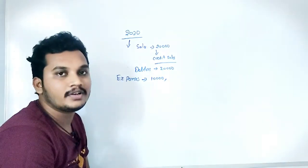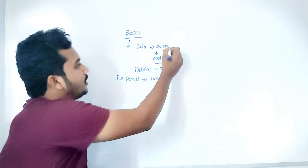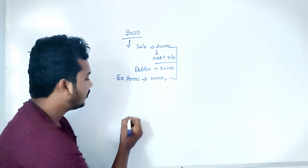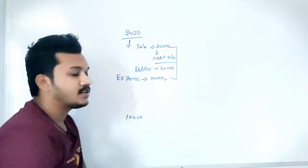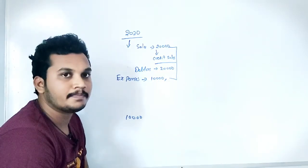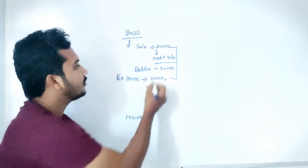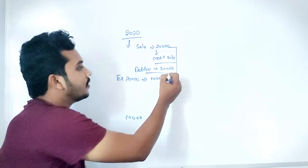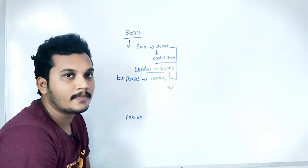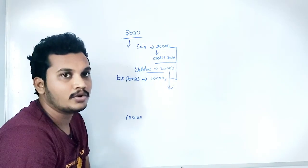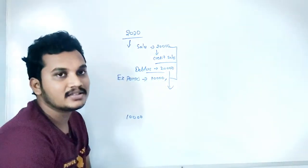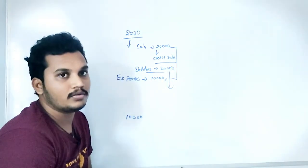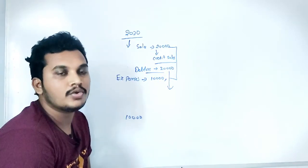So what is our profit? 20,000 in sales minus 10,000 in expenses — that is 10,000 profit. If you prepare a profit and loss account, our profit will be 10,000. But here, if you see, there are debtors from those credit sales, meaning we haven't received the amount. The debtors might pay us in the next year, or they may not pay at all.